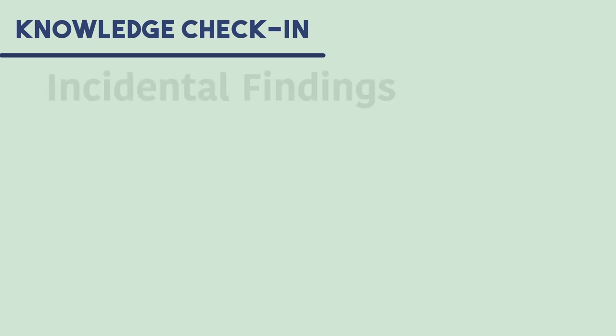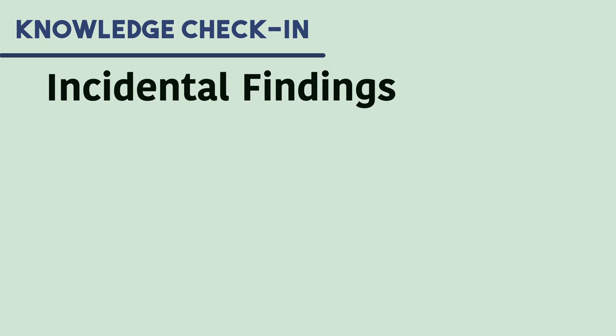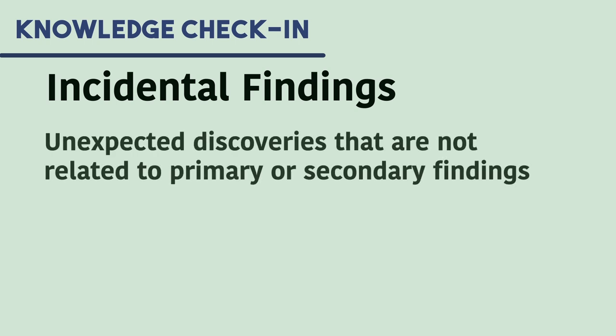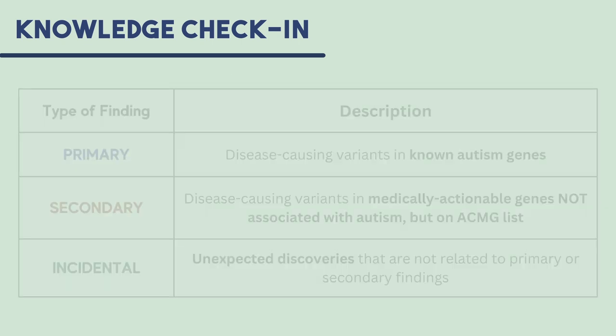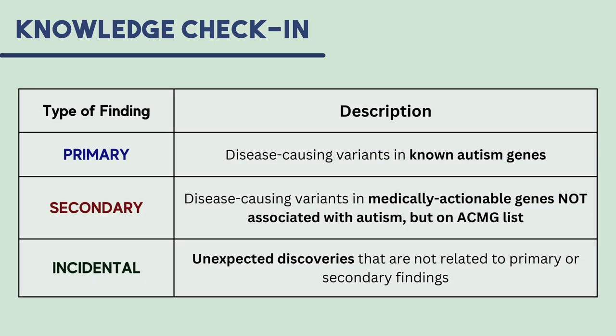The last type of result is an incidental finding. This type of genetic finding includes unexpected discoveries that are not related to the primary or secondary findings. If you are still unsure about what is entailed in each type, please feel free to revisit parts of the video.